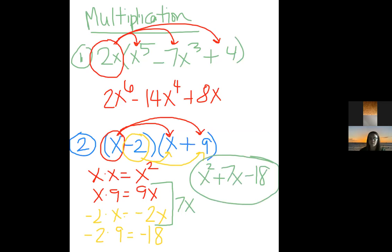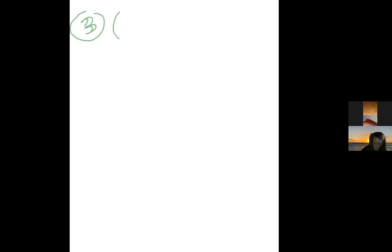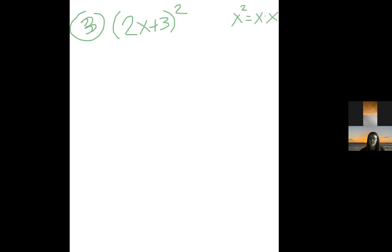That's our final answer for multiplying two binomials. Another way FOIL can be hidden is a problem like (2x + 3)². We cannot distribute the square into the parentheses — that won't give the same answer. When you square something, it means you multiply it by itself, so this is a hidden FOIL problem.